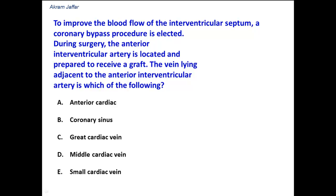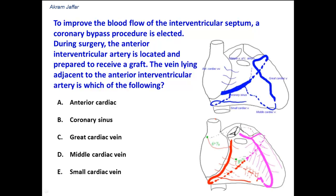First of all, we have to visualize in our mind's eye where is the location of the anterior interventricular artery. The anterior interventricular artery is located in the anterior interventricular groove on the anterior surface of the heart. It's also called the left anterior descending artery because it is a branch of the left coronary artery. Now let's see which vein is located close or adjacent to the anterior interventricular artery.